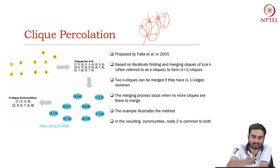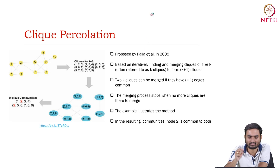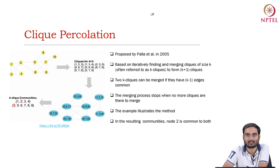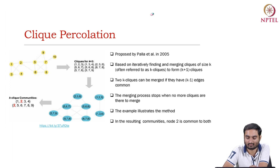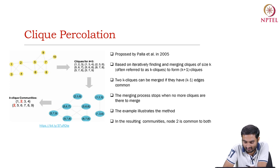The first technique that we will discuss is called the clique percolation method. I think this was the first method proposed, way back in 2005 by Palla et al. It was published in Nature, and with this method you can detect overlapping communities. So let us see the technique here.